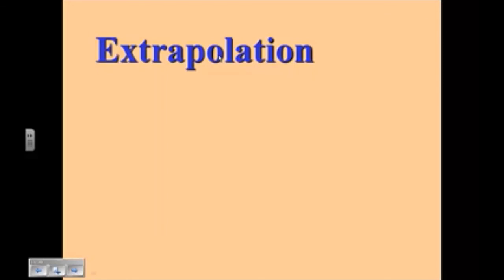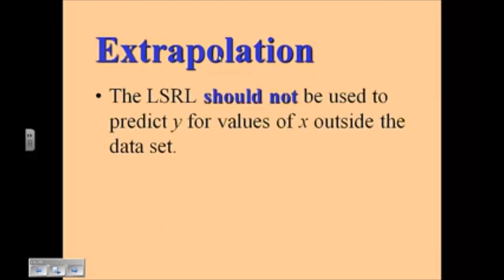Okay, I mentioned extrapolation earlier. Extrapolation is the least squares regression line should not be used to make a prediction, predict y value for values of x outside the data set. For our previous example we were trying to predict the age of someone who's 20 years old based on that equation. We can't make that prediction because none of the data that we have actually is within that data set, and it also doesn't make sense.